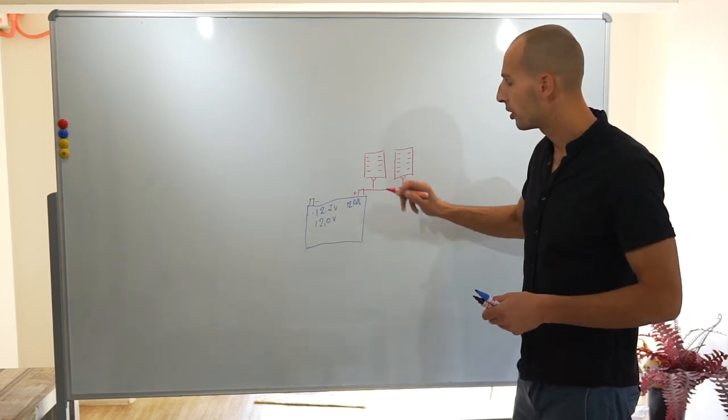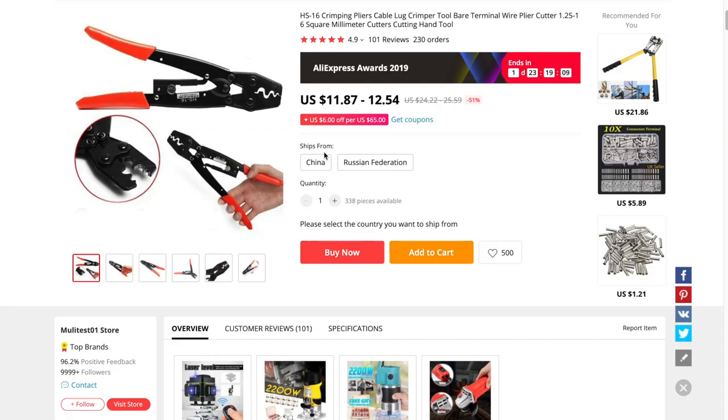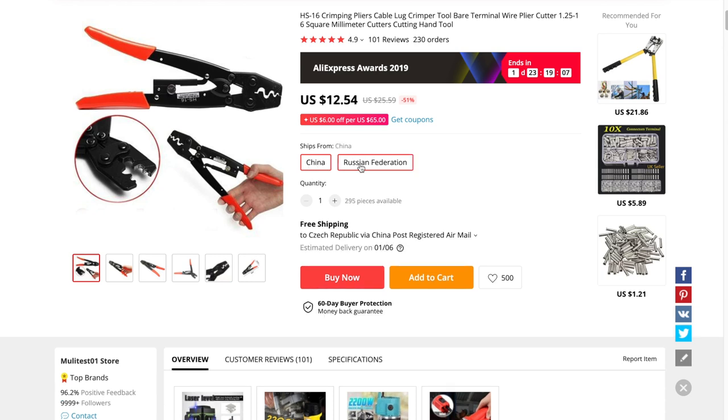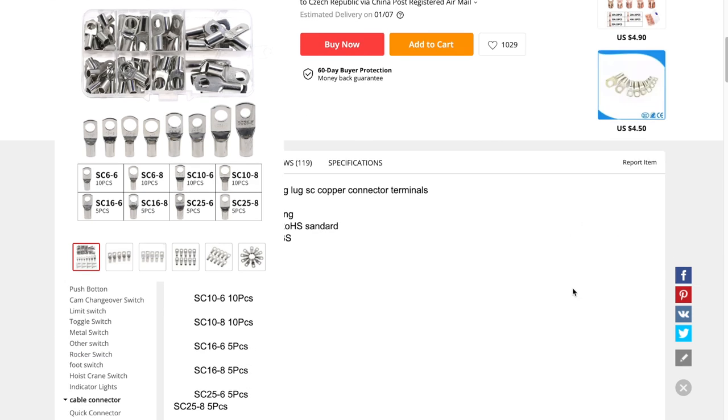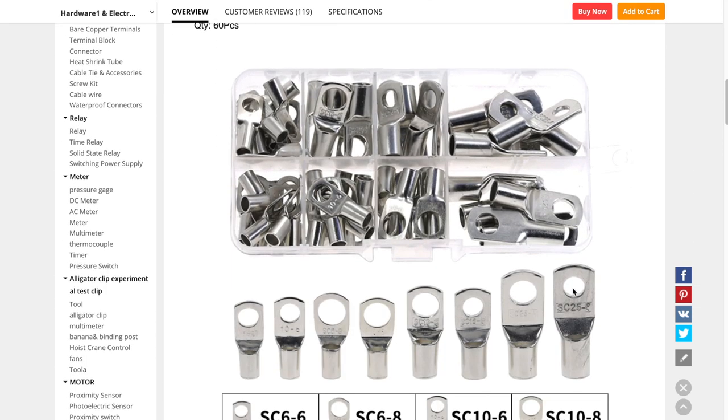So these cables you can purchase finished, or you can just buy meters of this cable, buy these crimping pliers, and you can crimp there and create whatever you want for a specific length.